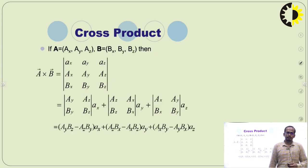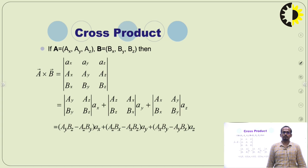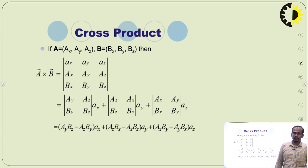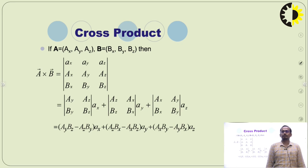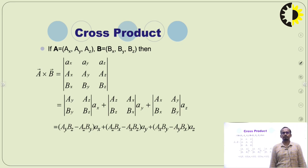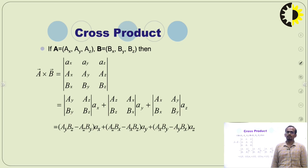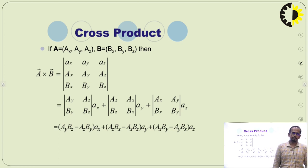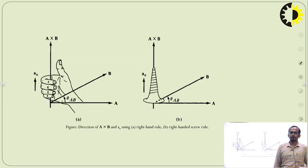We can find the cross product by using the determinant matrix method. If the components of vector A are (Ax, Ay, Az) and of vector B are (Bx, By, Bz), then A×B can be easily found using this matrix formulation.